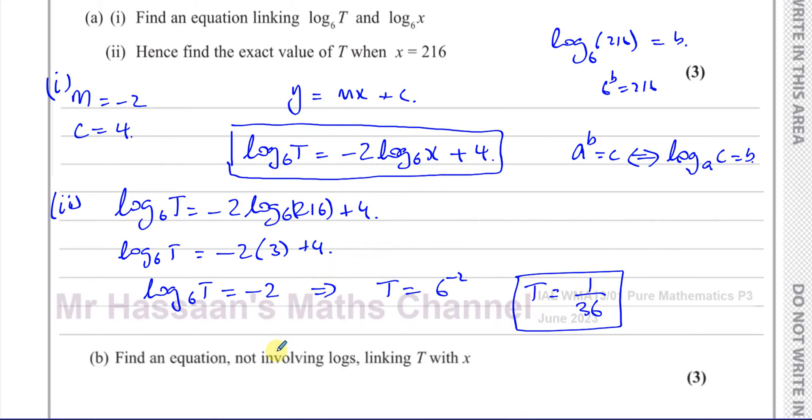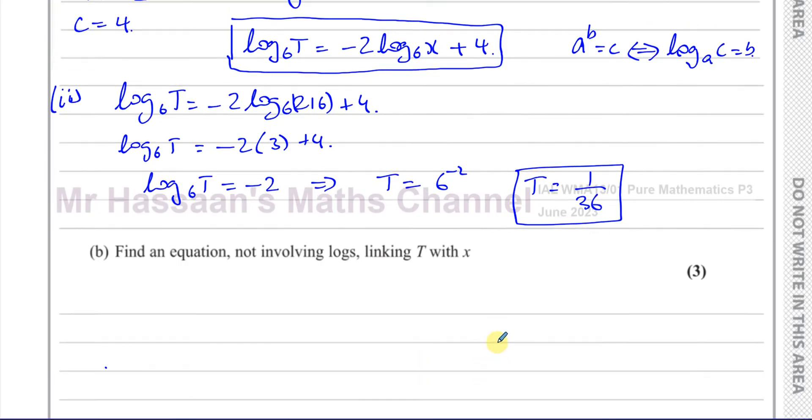Then it says find an equation not involving logs linking T with X. So we have to basically take this log equation and take the logs out of it. Log base 6 T equals minus 2 log base 6 X plus 4. In order to do this, what I like to do is bring the log terms together. So I'll do log base 6 of T plus 2 log base 6 of X equals 4.